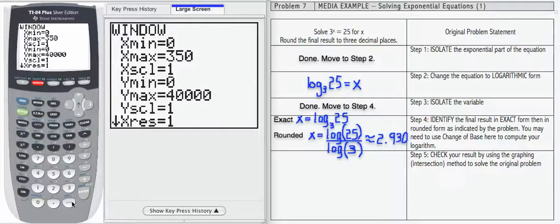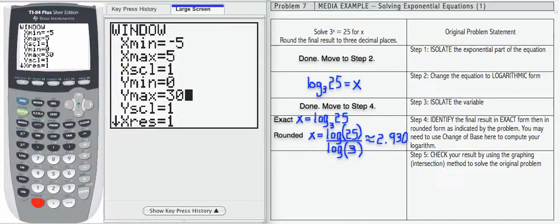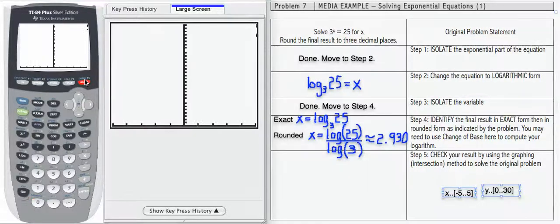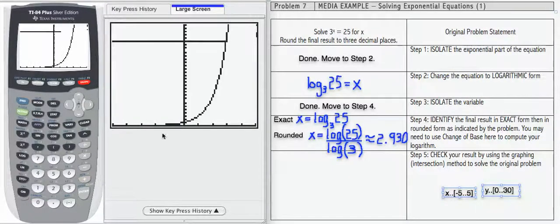Now for the window on this one, I'd like to use negative 5 for x min and 5 for x max. For y min, I'd like to use 0 and for y max, I'd like to use 30. And you'll see why I chose these values in just a minute. If you need to see what those are, you can see them here on the right hand side in the box.